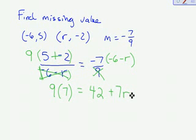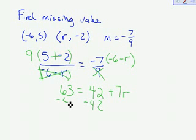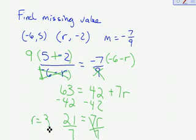And now I can solve this just like a regular equation. 9 times 7 is 63. Subtract 42. So I get 21 equals 7r divided by 7 and I end up with r equals 3.